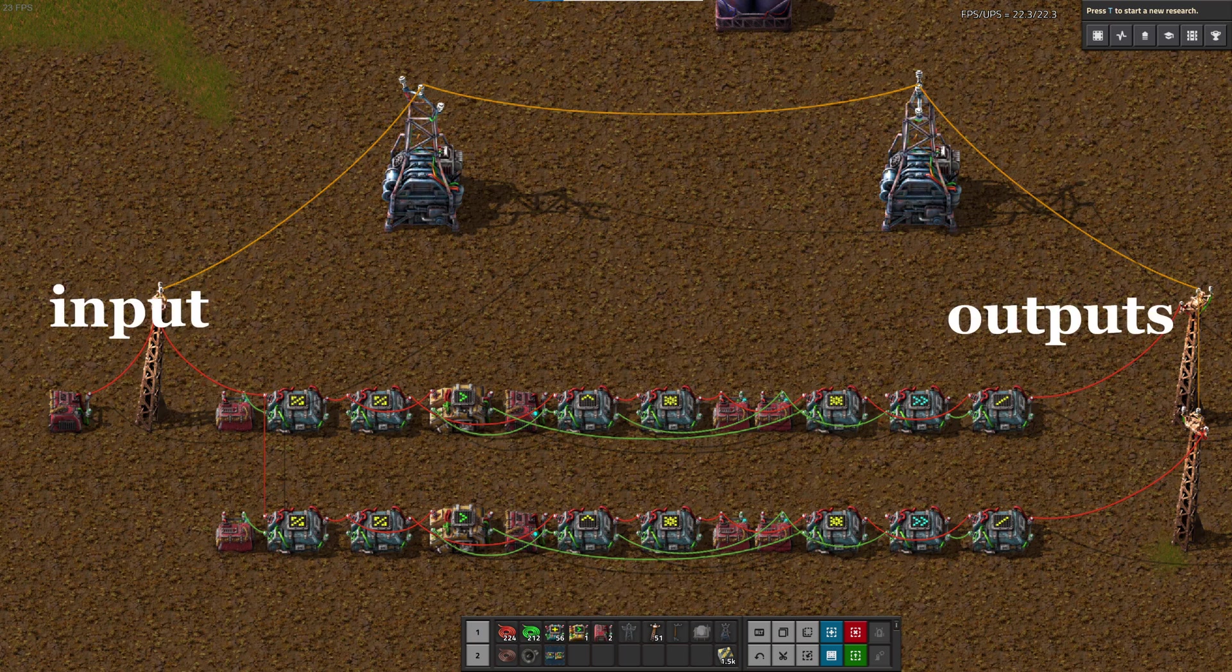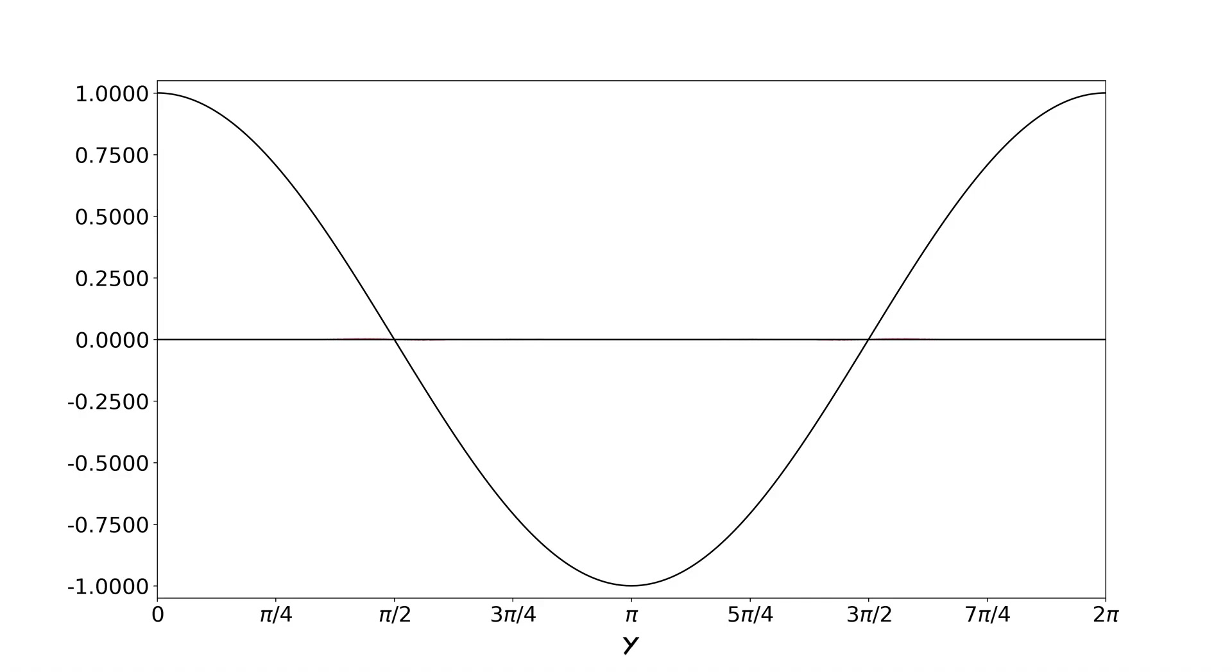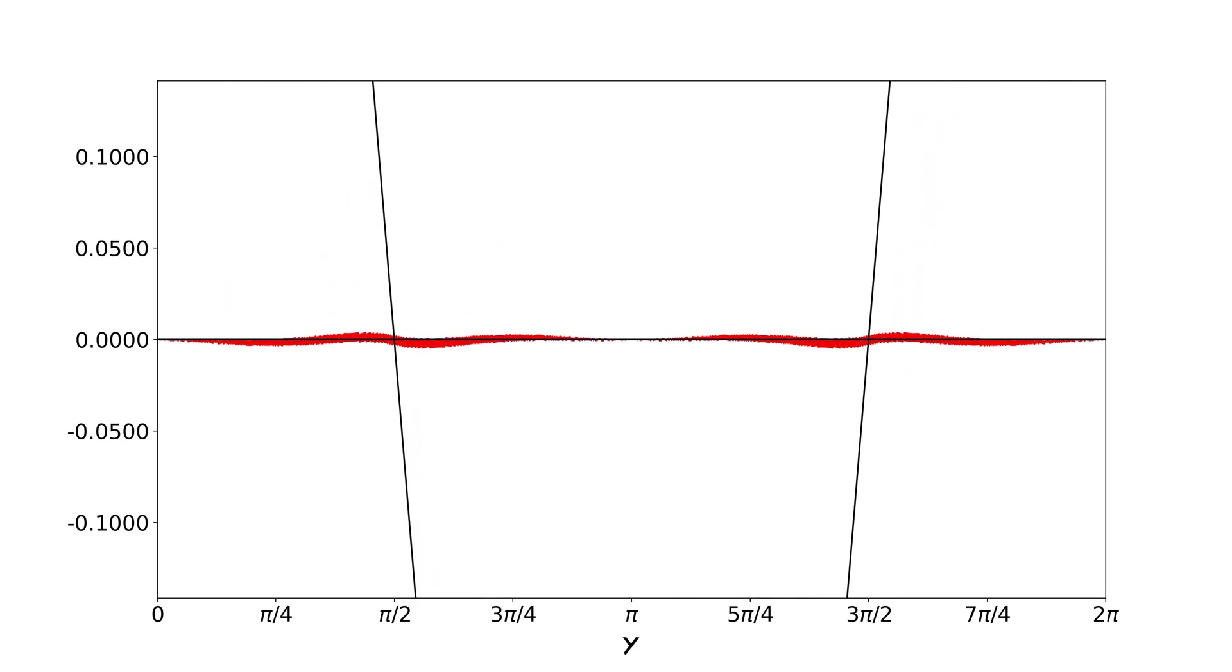But how good is this at calculating cosine? Let's plot the error. First the cosine itself as a reference for size. And here is the error of the implementation compared to the real cosine.